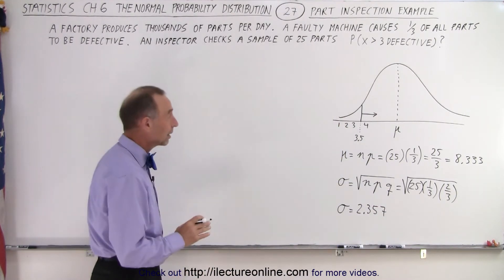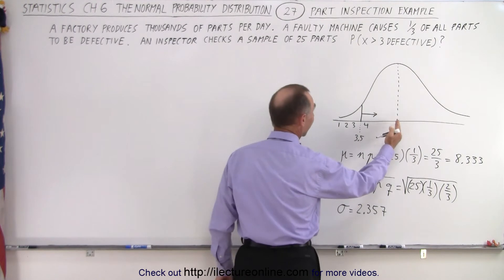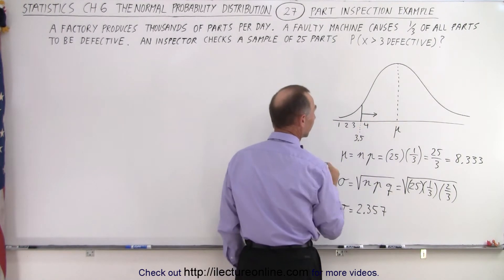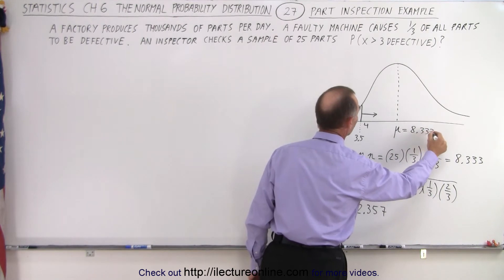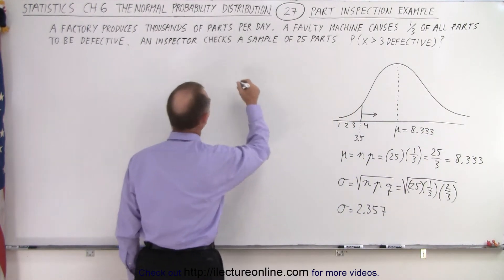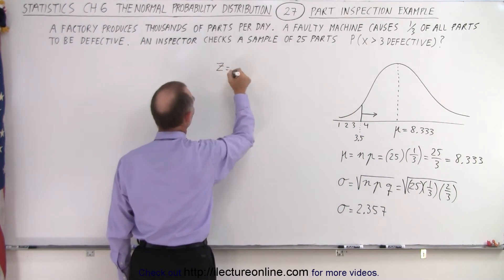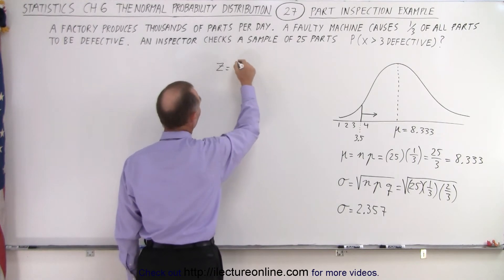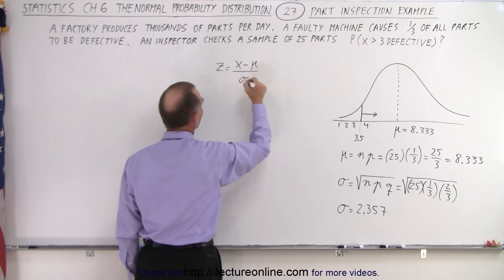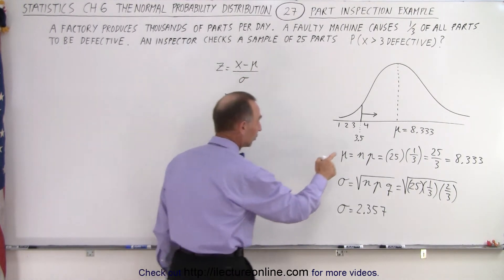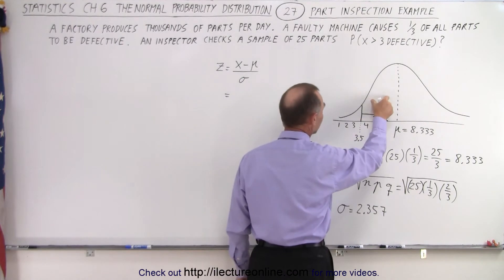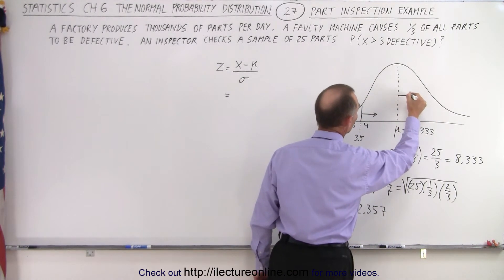So now what we need to figure out is how many sigmas is that from there to there? All right, so this is now we know to be 8.333. And so we could say that z, which is the number of sigmas, is equal to x minus the mean divided by the standard deviation. So x is the point chosen. In this case, it will be 3.5.